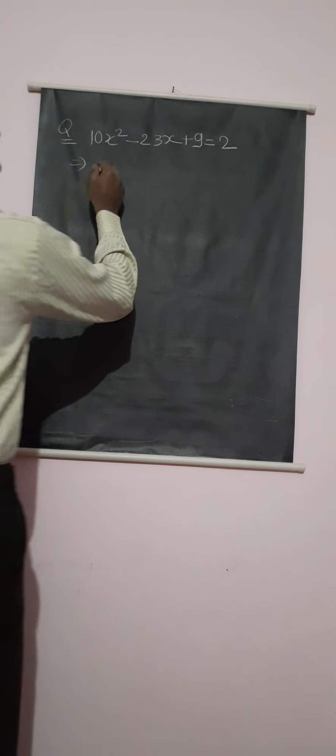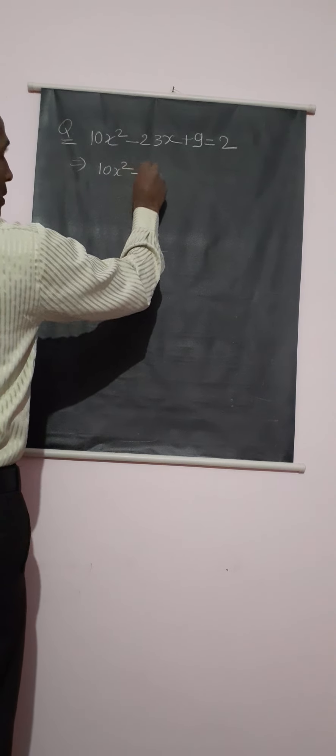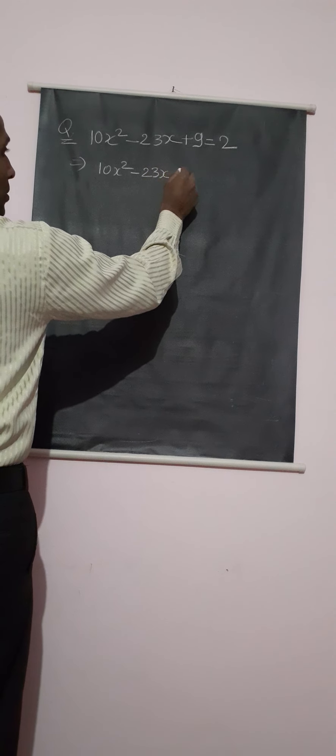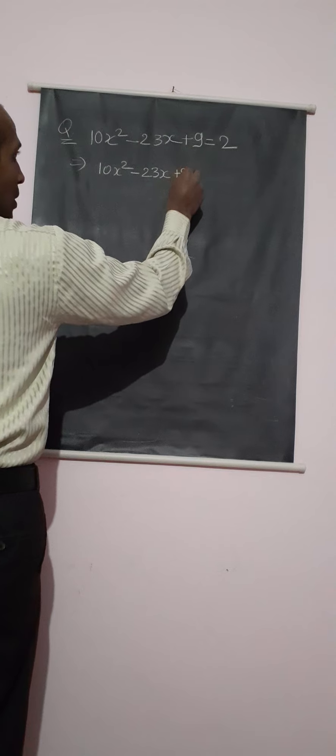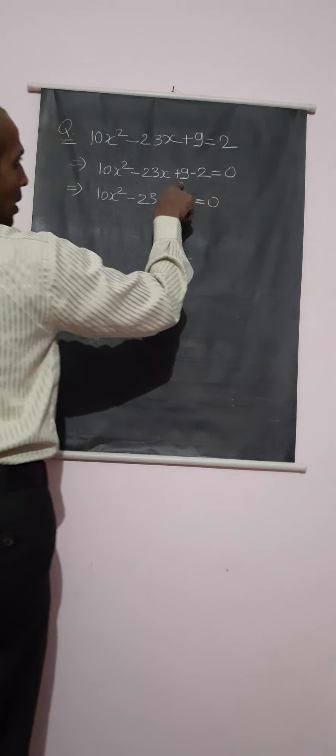Where x terms can be rectified by various values? Here, 10x² - 23x + 9 - 2 = 0. Now, 10x² - 23x + 7 = 0. Here it is 9 minus 2 equals 7.